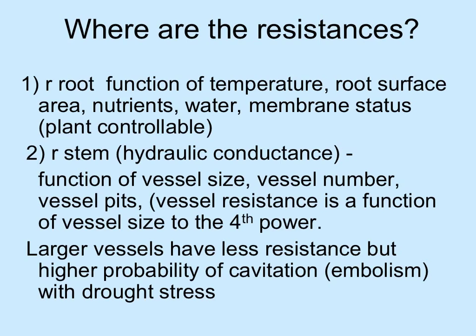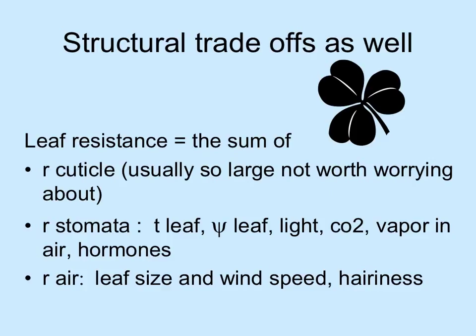There is an upper limit on vessel size because if vessels are too large there is a much greater probability they might collapse or have an embolism. Cavitation means collapsing with drought stress. In leaves, the importance of structure and external morphology is clear: leaf resistance is the sum of resistance from the cuticle — the waxy covering on the outside of the epidermis — the resistance from the stomata, which is a function of leaf temperature, leaf potential, amount of light, concentration of carbon dioxide, water vapor in the air, and plant hormones.